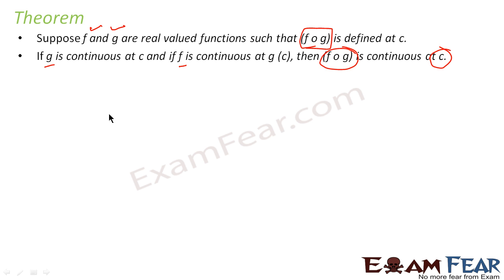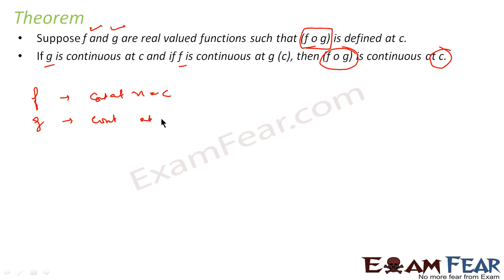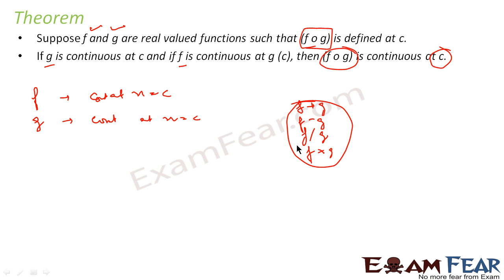Till now we have seen that if f is continuous at x = c and g is continuous at x = c, then f + g is continuous, f − g is continuous, f/g is continuous, and f × g is continuous. Now I'm saying if f and g are continuous at x = c and f∘g is defined, then f∘g is also continuous.